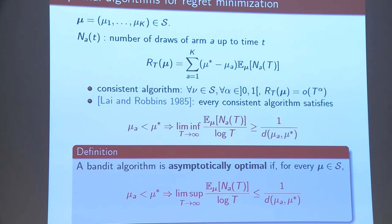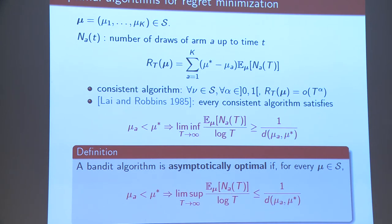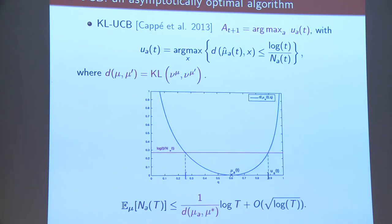So to have an algorithm with low regret, we need an algorithm for which the expected number of draws of any sub-optimal arm is small. The lower bound of Lai and Robbins tells us that we need to draw sub-optimal arms infinitely many times — more specifically, that the expected number of draws of a sub-optimal arm a up to time t is asymptotically lower bounded by log(t) divided by d(μ_a, μ*), the KL divergence between the distribution of mean μ_a and the distribution of mean μ*. The smaller this quantity, the larger the arm has to be drawn, because we have trouble discriminating between this arm and the optimal arm.